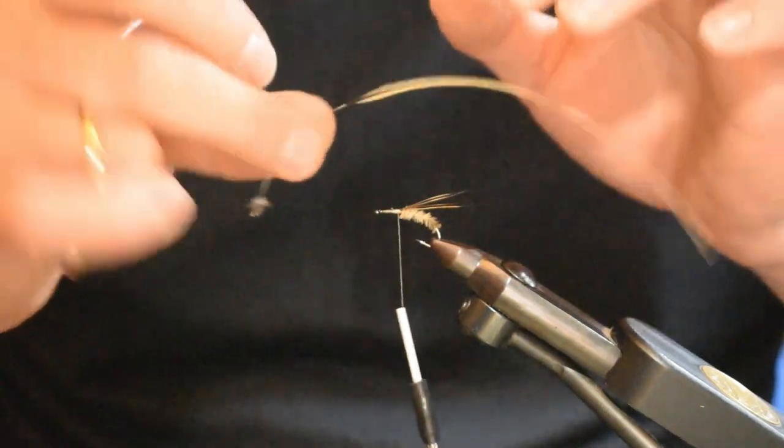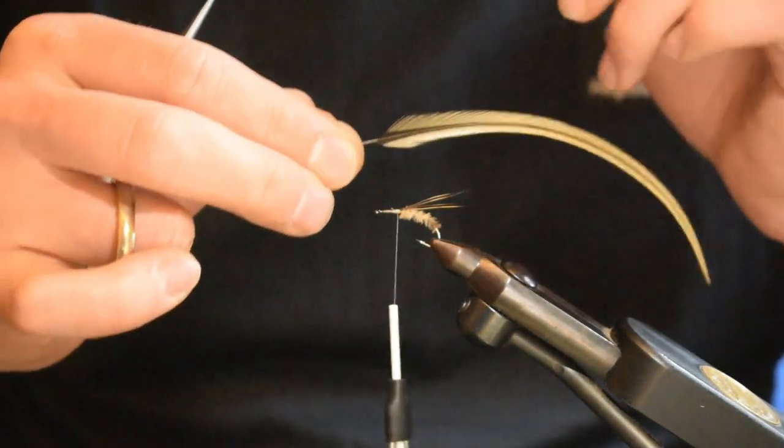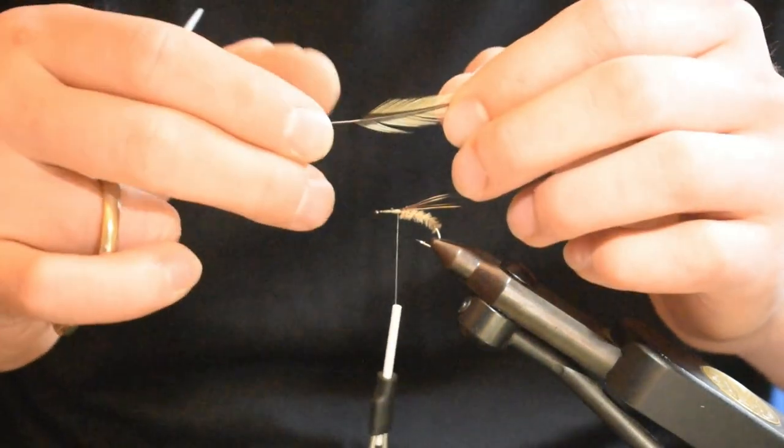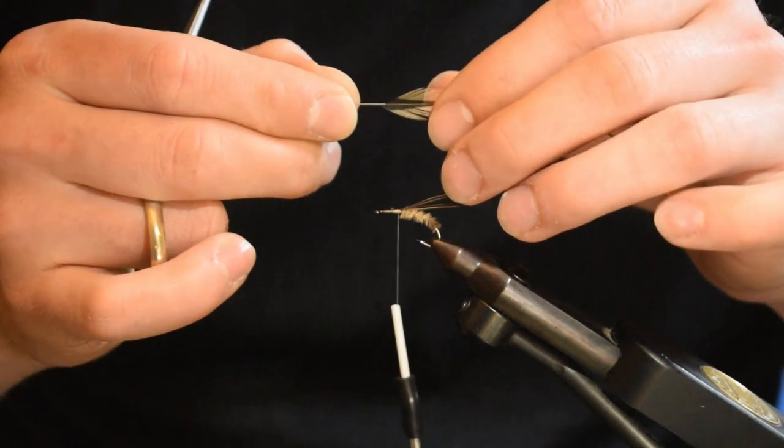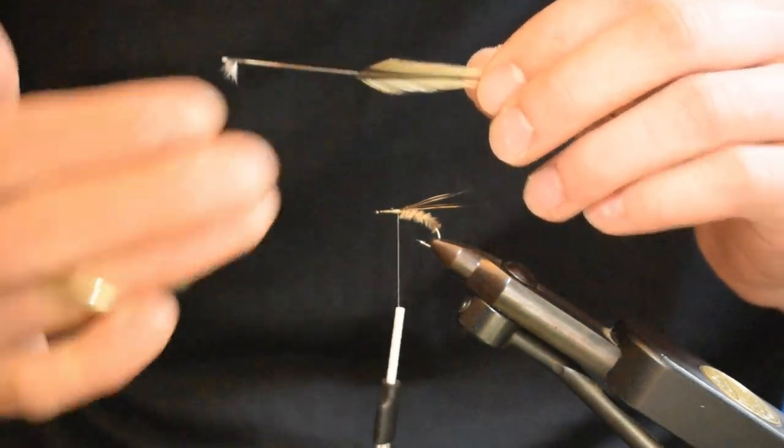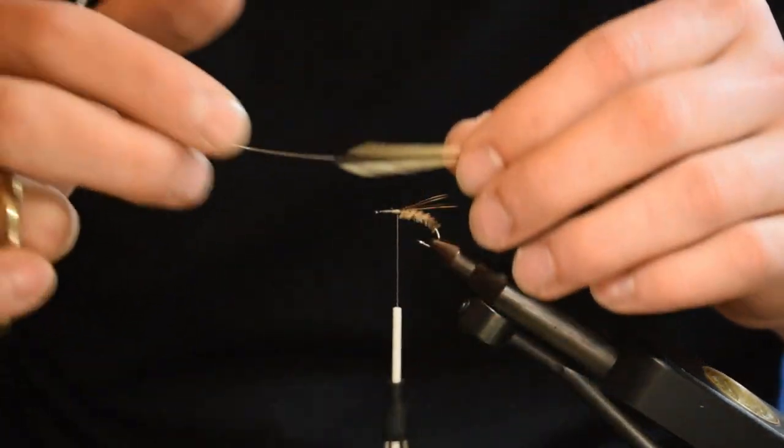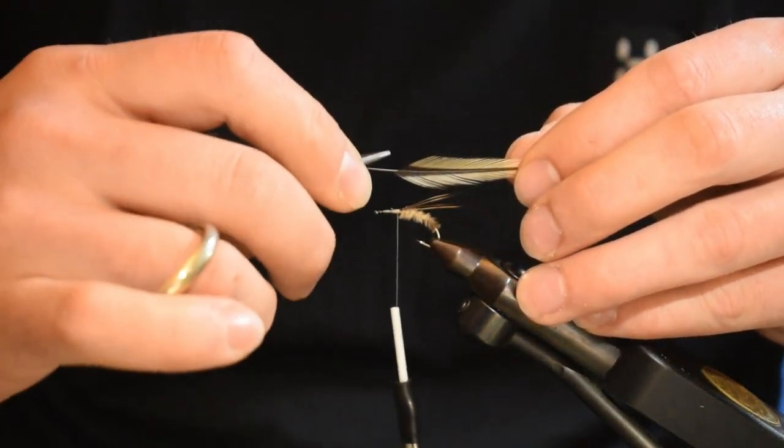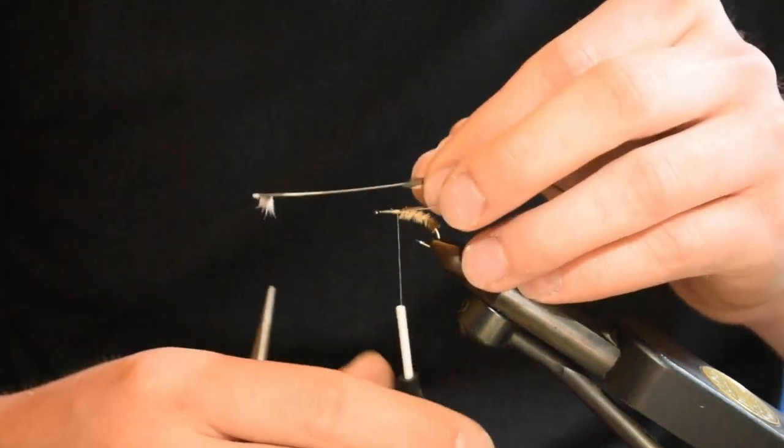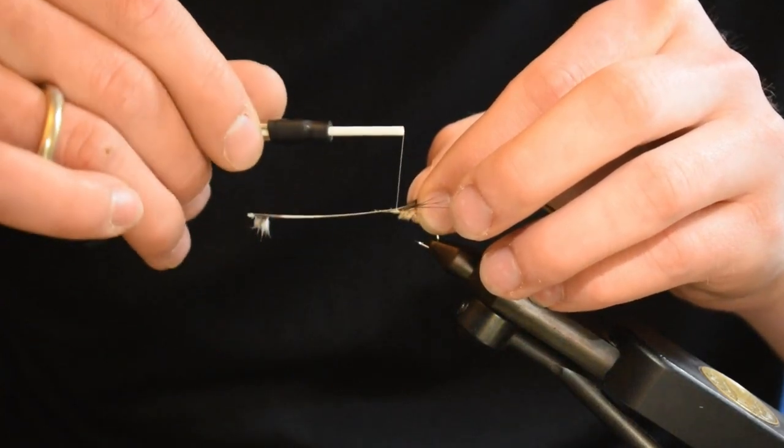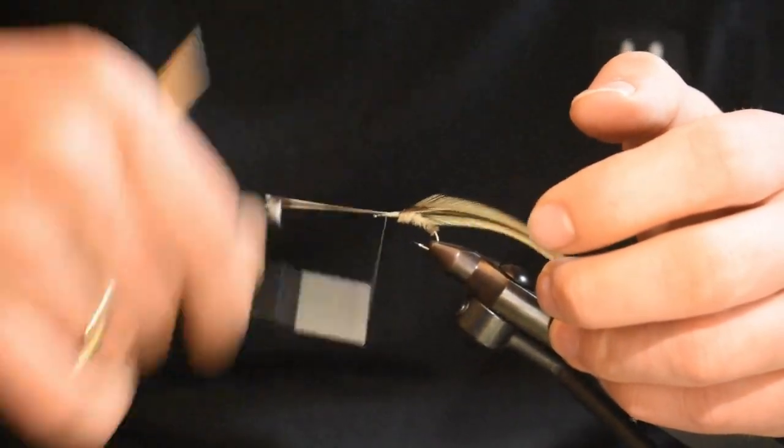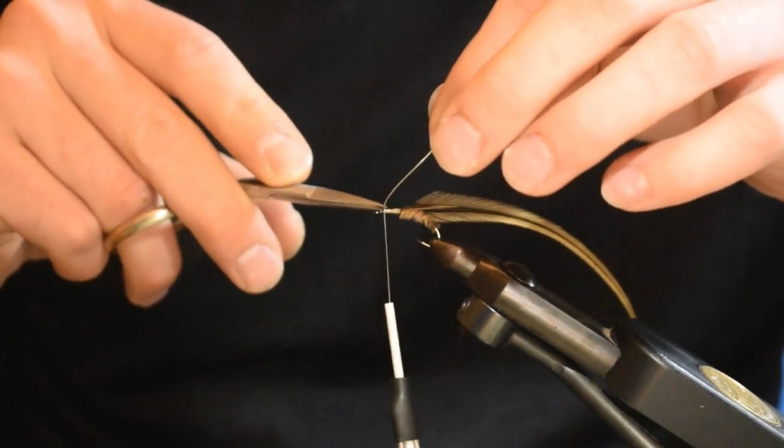Next, I'm going to take a dry fly hackle in the color golden badger. It's quite dark in the middle. It's going to imitate the small, quite small and strong legs that the Ephemera Danica has. There's a little more fiber on the other side, so this feather bends this way, it has a curve to it. On the other side, the upside, I've taken off a couple more fibers than the other side. That way, the hackle is going to look really good. It's going to sit very good right away on top of the front body or the hatching body of the fly. Tie that in.